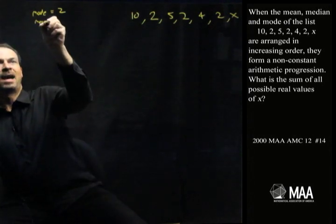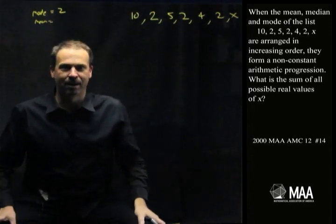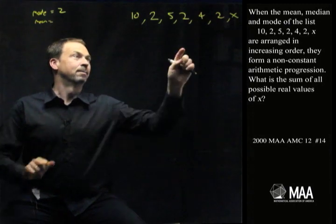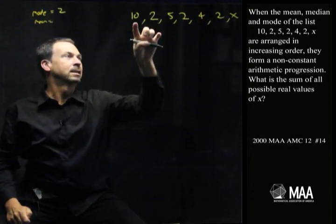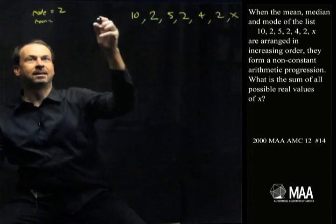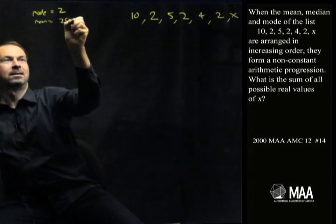The mean, that's another word for average, is going to be the sum of all these numbers divided by how many there are. So what is the sum? There's 3, 2, 6, and 4 makes 10, 20, 25, plus x. So it's 25 plus x over 7.